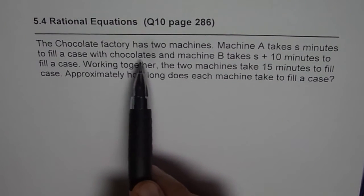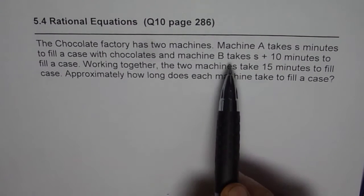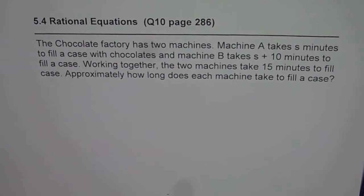The question is: the chocolate factory has two machines. Machine A takes s minutes to fill a case with chocolates and machine B takes s plus 10 minutes to fill a case. Working together the two machines take 15 minutes to fill the case. Approximately how long does each machine take to fill a case?